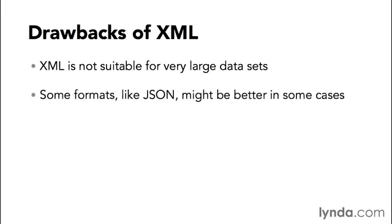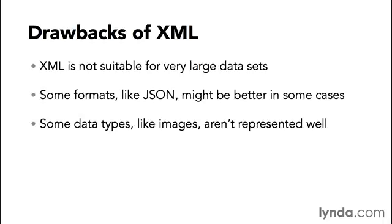Some data formats like JSON might be better in some cases depending on how you're going to use the data. If you know that the data is going to be used in a JavaScript execution environment, there are some cases where JSON just might be more efficient. Some data types like images aren't represented well in XML because it's a text format. You can encode images and insert them into XML documents, but that gets pretty unwieldy pretty quickly.